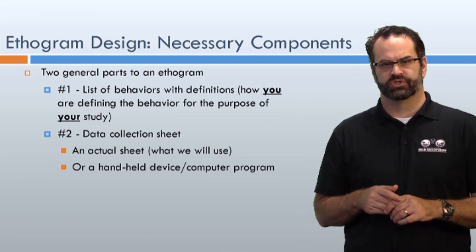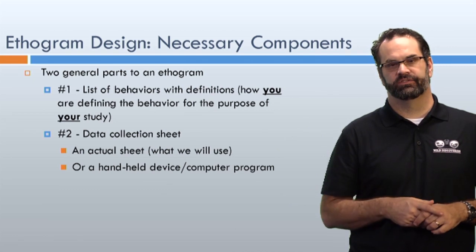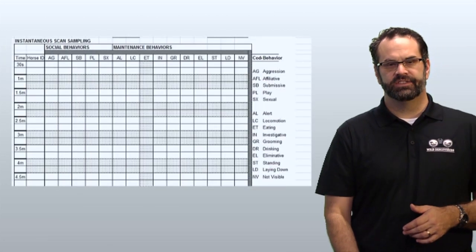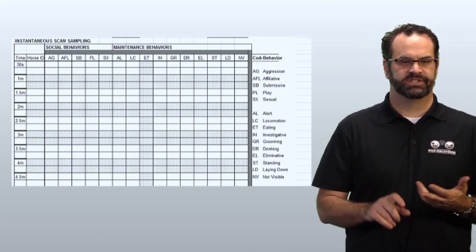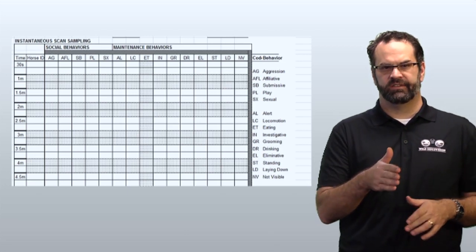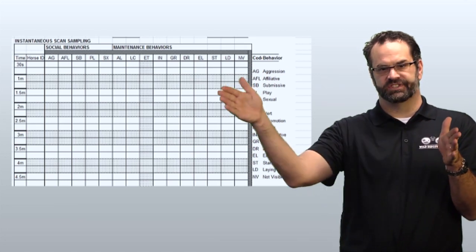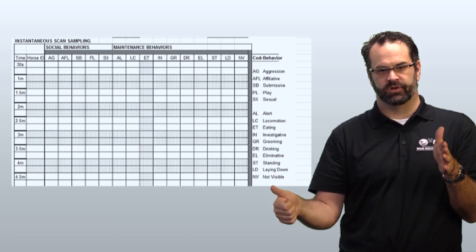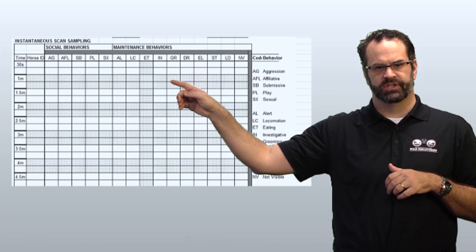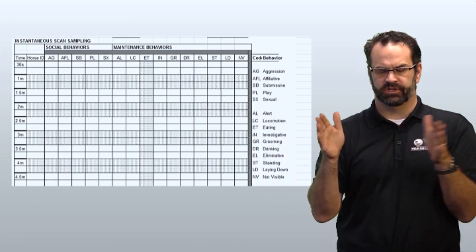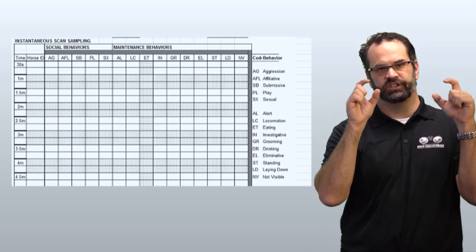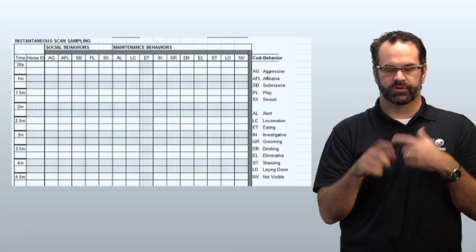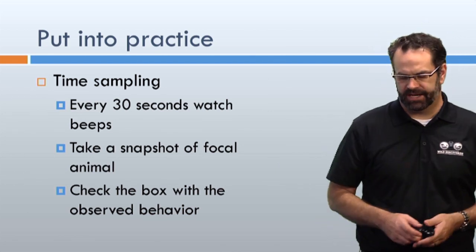For data collection, we'll use an actual paper sheet in this class, though handheld devices and computer programs also exist. This is a standard time-budget ethogram we used with Somali wild asses, Grevy's zebras, and horses. Social behaviors are listed first in order of importance — aggression, affiliative, submissive, play, and sexual behaviors — followed by maintenance behaviors. The sheet has 30-second intervals and spaces for two horse IDs, so if you're observing two animals at once you can record both. With practice you can observe three or four animals simultaneously.